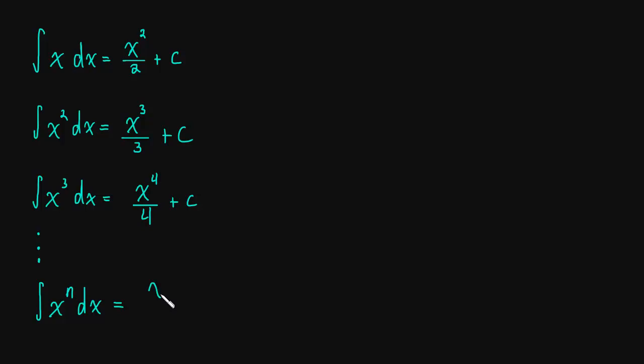So here we'd have x to the n plus 1. We're adding 1 to that exponent, and then we're just dividing by that new exponent, n plus 1. And of course it's an antiderivative so we need to add plus c here. And that is the power rule for antiderivatives.